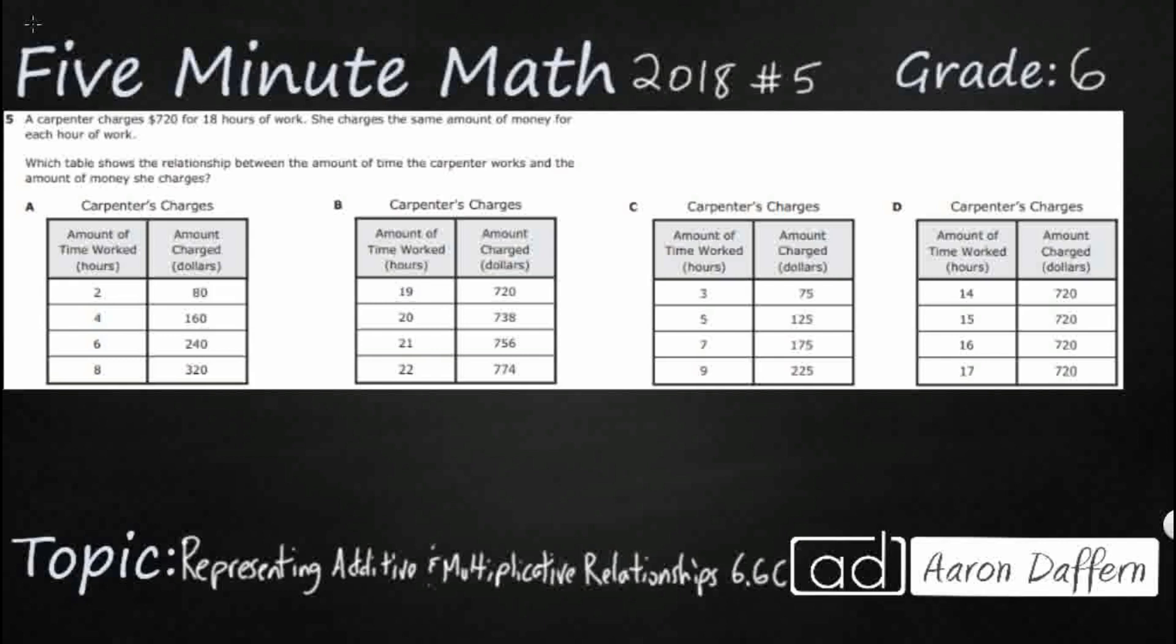So a carpenter charges $720 for 18 hours work and we have an equal rate. It's the same amount of money for each hour, so we need to show the relationship between the amount of time that he works and the amount of money that she charges. But you're not going to see this 18 anywhere. So this $18, $720 is not going to show up anywhere on any of our tables. So there's a few different ways that we could do that.